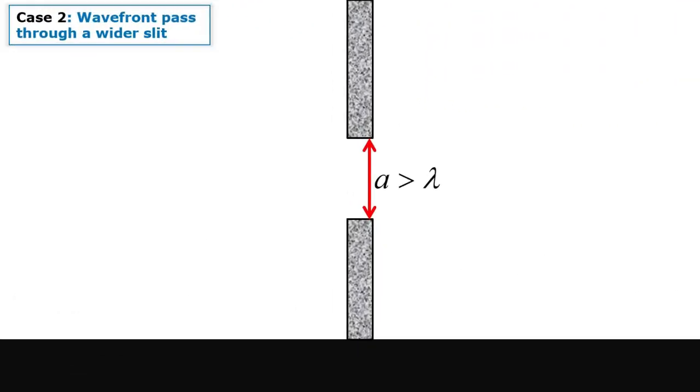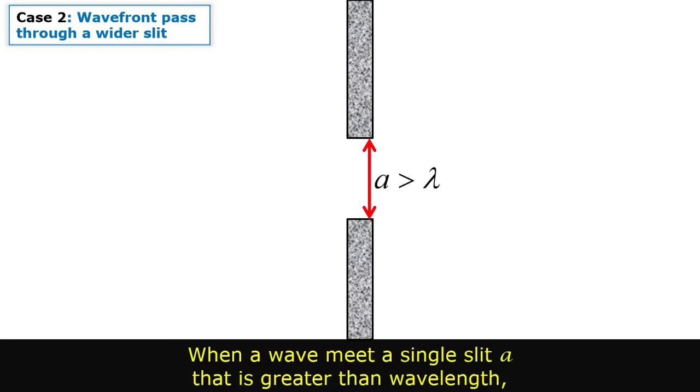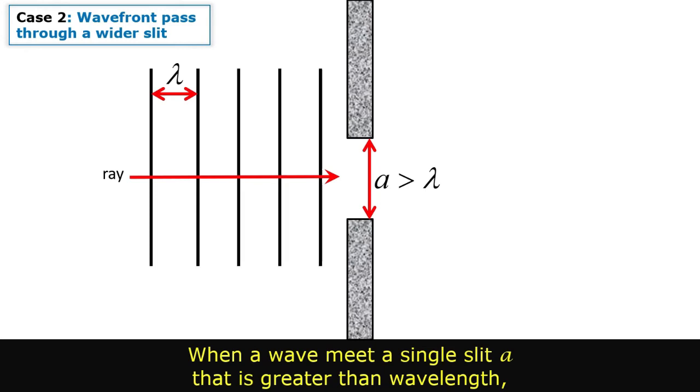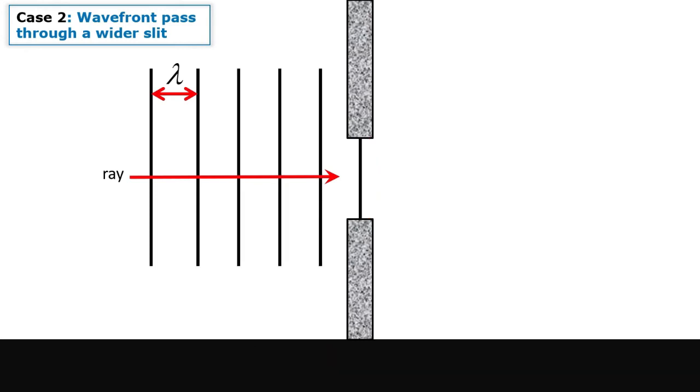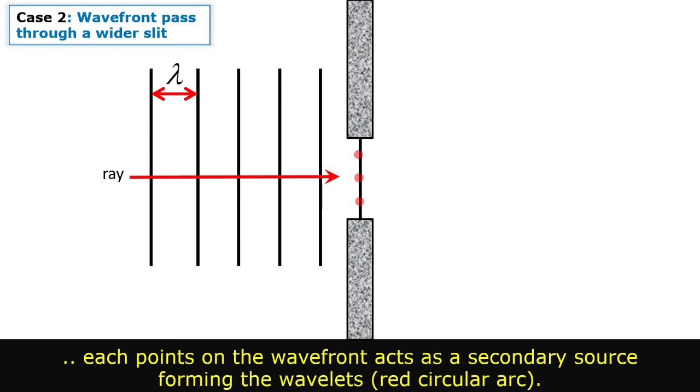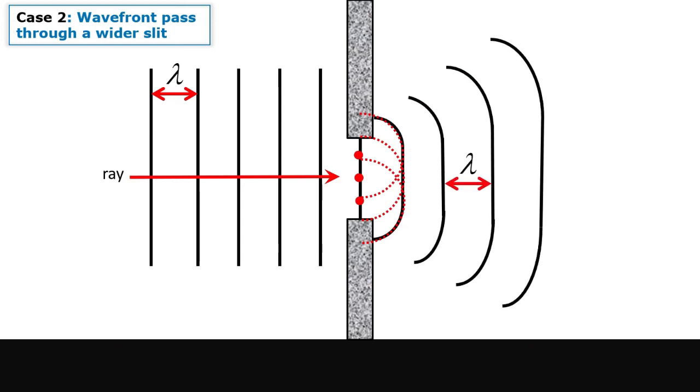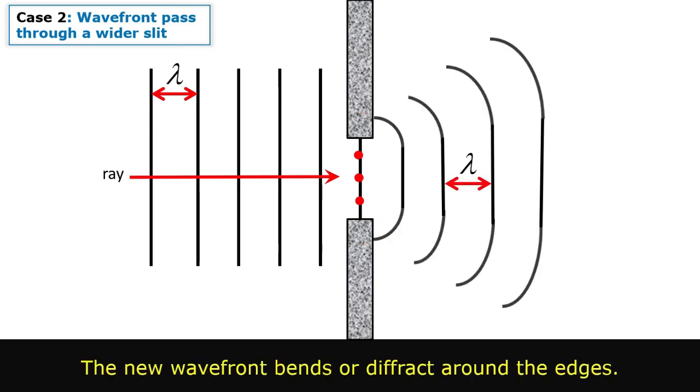Case 2: When a wave meets a single slit A that is greater than wavelength, the key points on the wavefront act as a secondary source forming the wavelets. The new wavefront bends or diffracts around the edges.